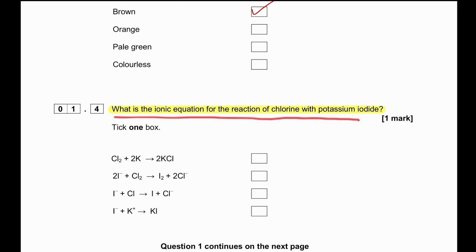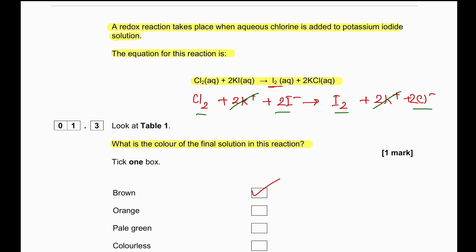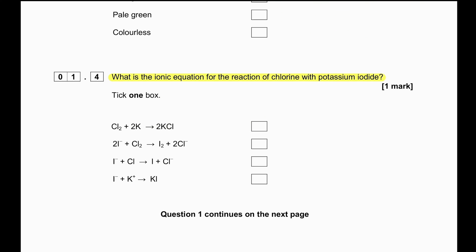What is the ionic equation for the reaction between chlorine and potassium iodide? We look at the original equation: Cl₂ and two potassium ions and two iodide ions react to produce iodine, two potassium ions, and two chloride ions. The spectator ions — potassium — are cancelled from both sides. The ionic equation is: Cl₂ + 2I⁻ → I₂ + 2Cl⁻. Any multiples of that will also be correct.